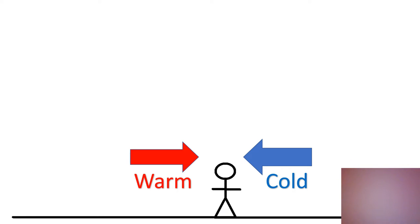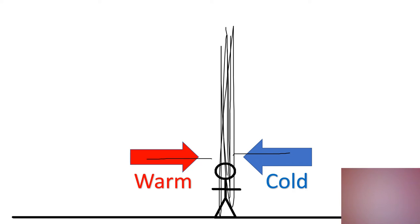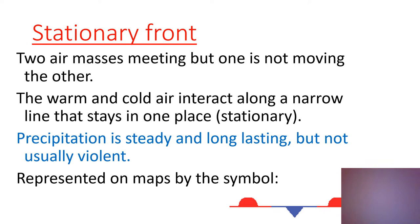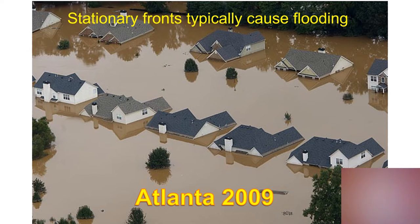But what if they're pushing into each other equally? This can happen where neither one is pushing the other and the front stays in one place — this is called a stationary front. You're still going to get clouds and rain because the warm air will naturally rise on top of the cold air. The two air masses are meeting but one's not pushing the other, so they interact along one narrow line that stays stationary. This means you get long-lasting precipitation but usually not storms. Because the rain stays in one place, stationary fronts typically cause flooding — too much water in one place at one time.